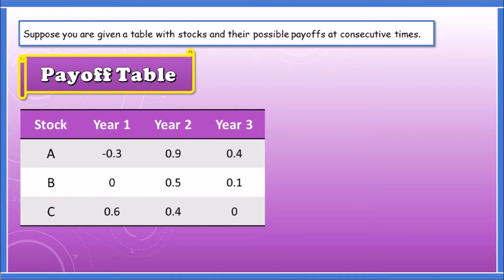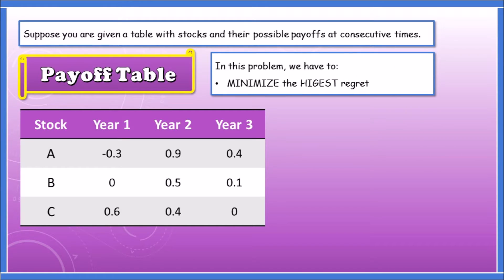So have a look at the table. We have three stocks A, B, C with values like negative 0.3, 0.9, 0.4, and so on. How do we solve this problem? How do we calculate the minimax regret? First things first, we need to find a regret table. This is a payoff table, and in this problem our aim is to minimize the highest regret.